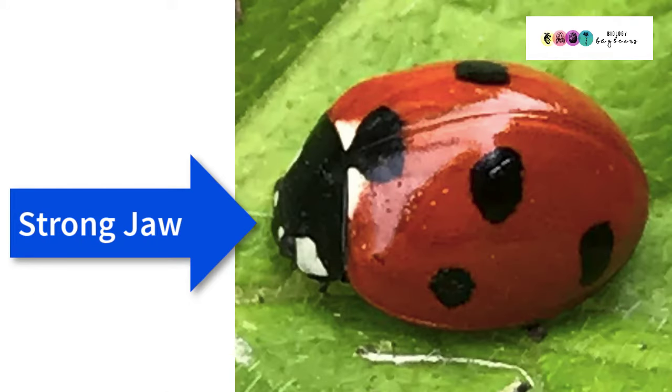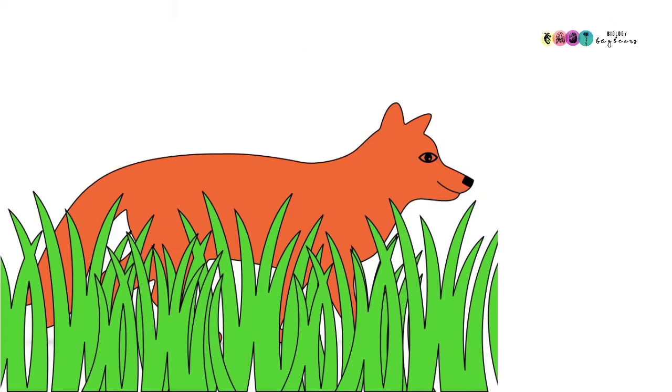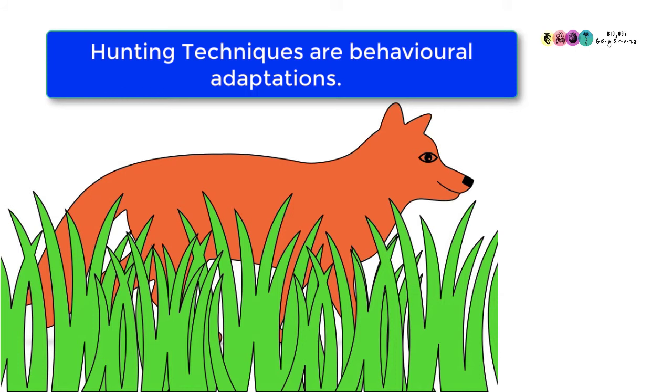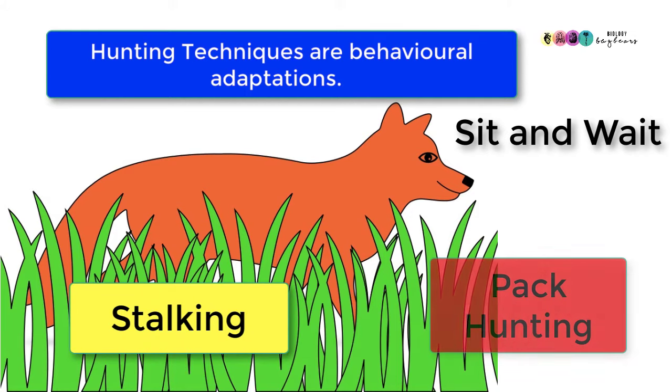Ladybirds have another type of physical adaptation, they have very strong jaws and this helps them greatly to catch and kill their prey, aphids. Many hunting techniques developed by predators are an example of behavioural adaptations. For example, many will wait and bide their time until it's a good chance to get their prey, others will stalk their prey and others will hunt in packs or groups.